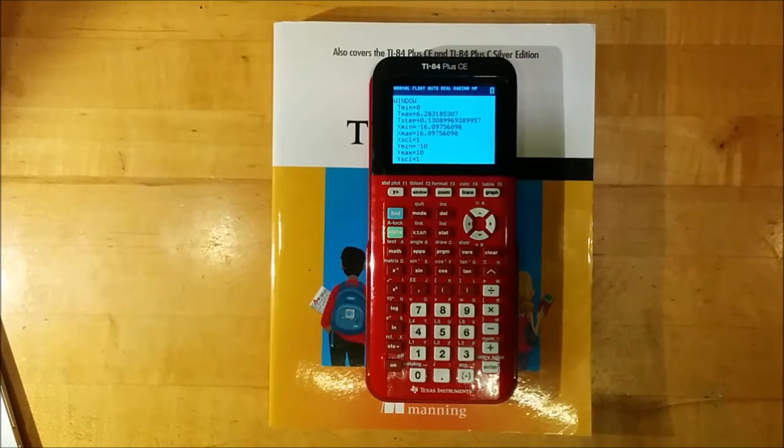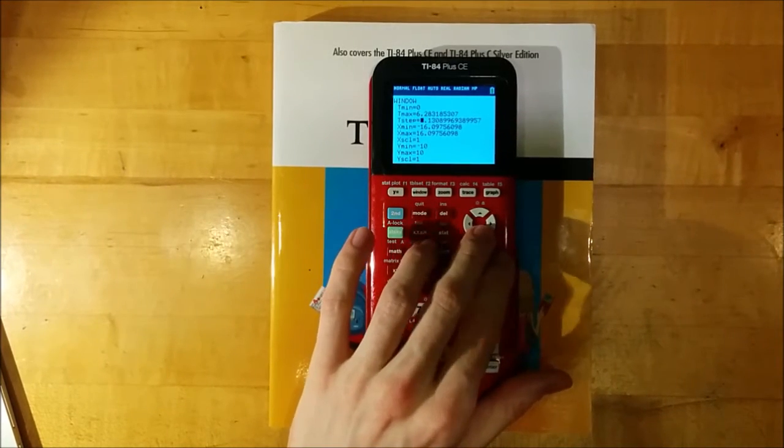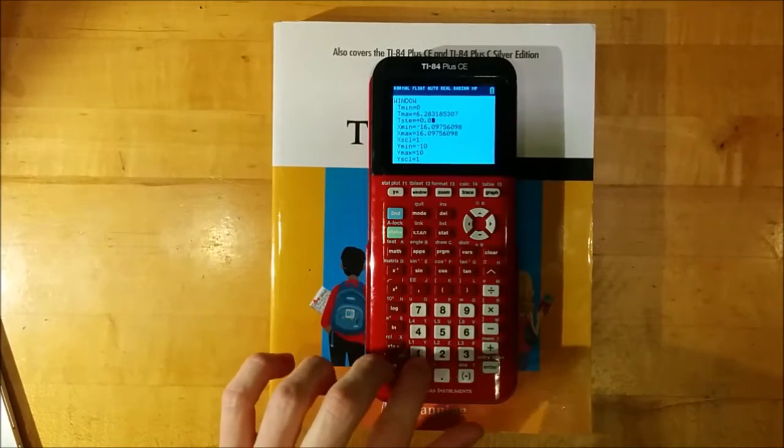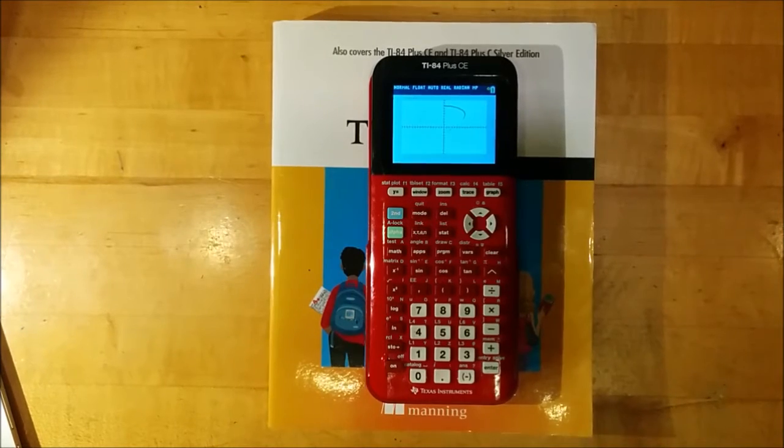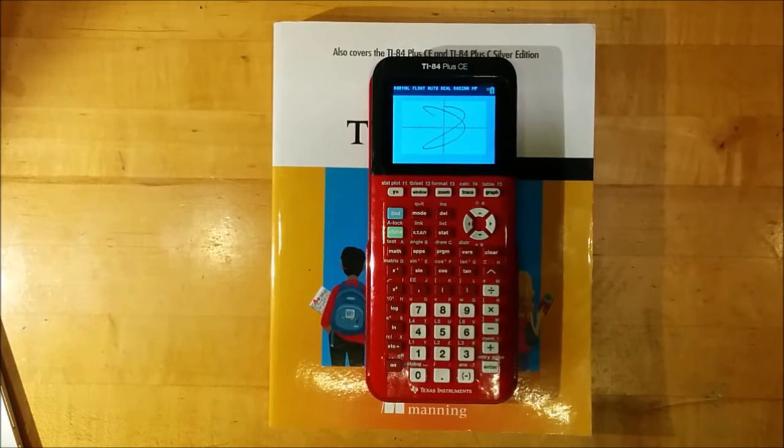If we wanted more detail in our graph, we can shrink the t step. For example, if I change this to 0.03, which is smaller than what we had there, and then press Graph again, you'll see that the graph takes longer, but it has more detail. The curves are sharper and not made of as long line segments.